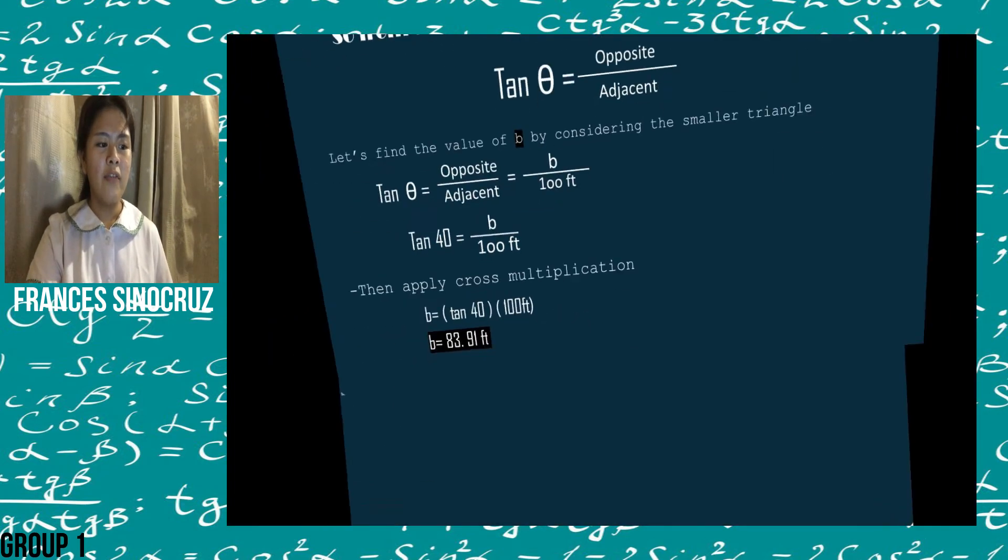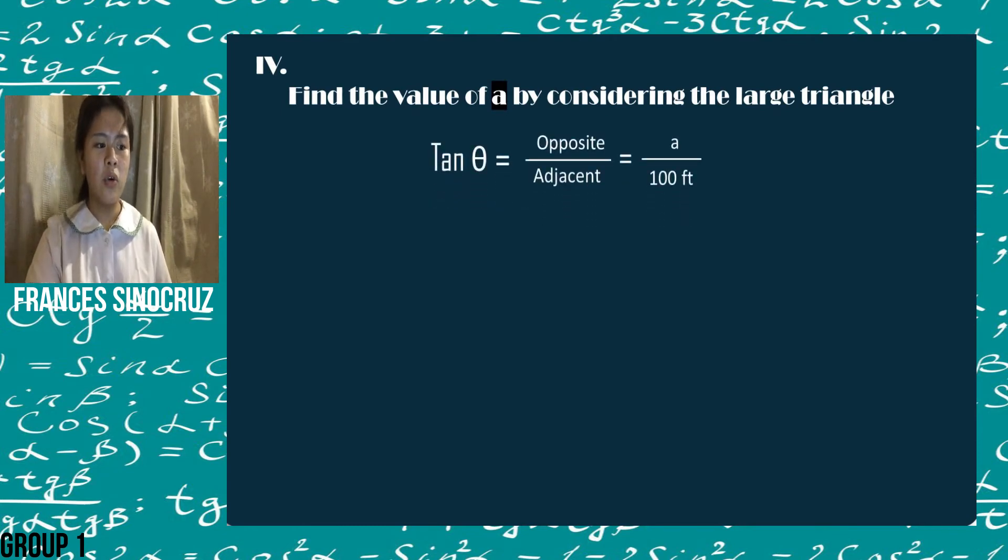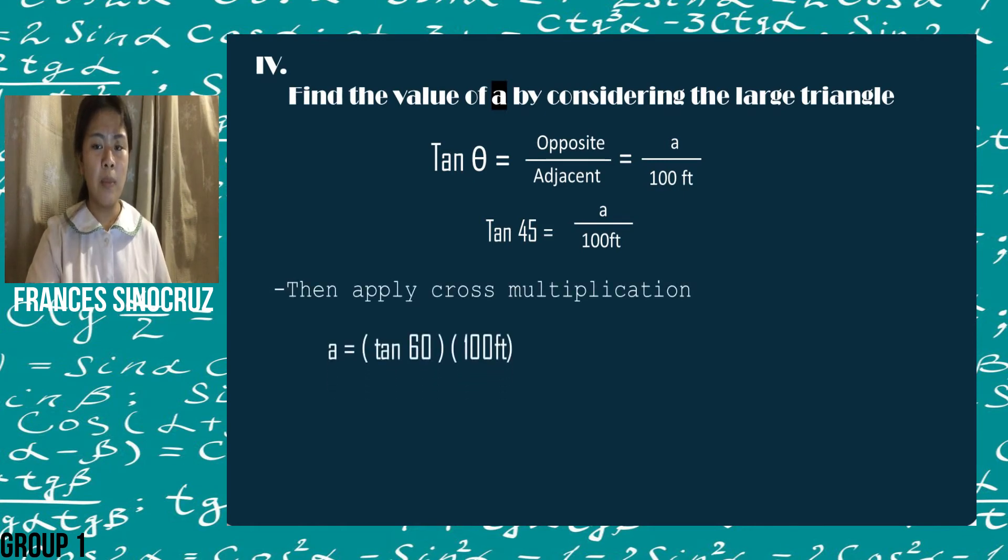Find the value of A by considering the large triangle. We will use the same formula as we did earlier, opposite over adjacent. Tangent 60 equals A over 100 feet. Then, we will now cross-multiply. Tangent 60 multiplied by 100 feet will result to 173.21 feet.